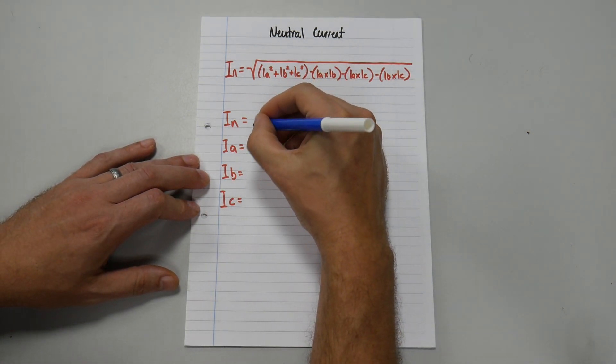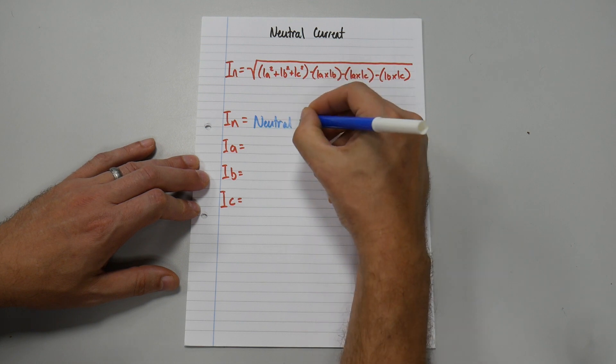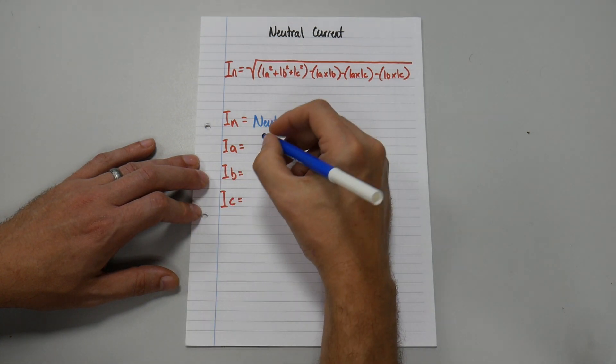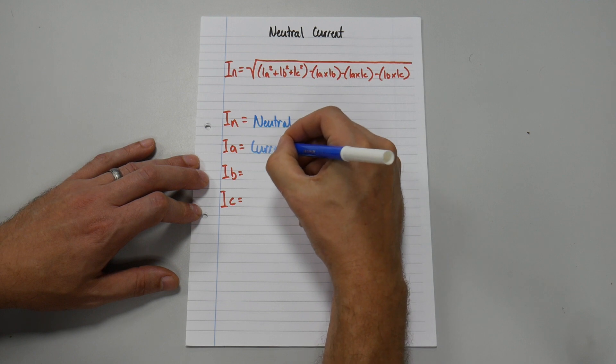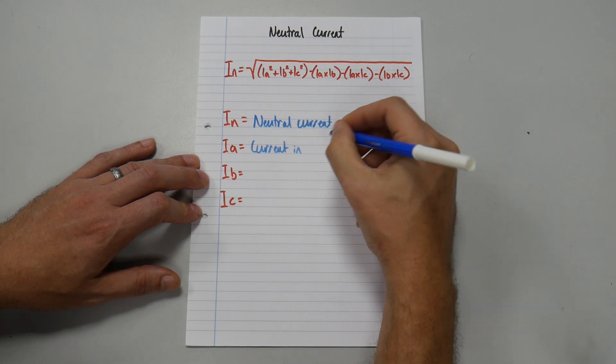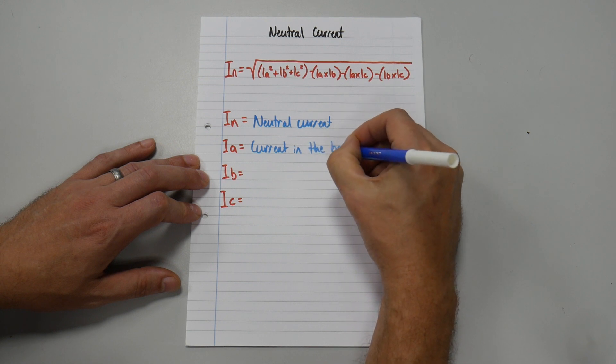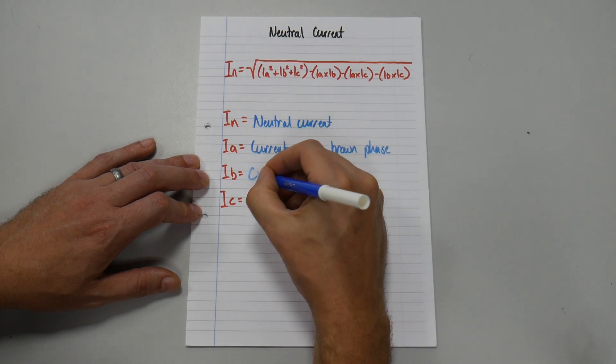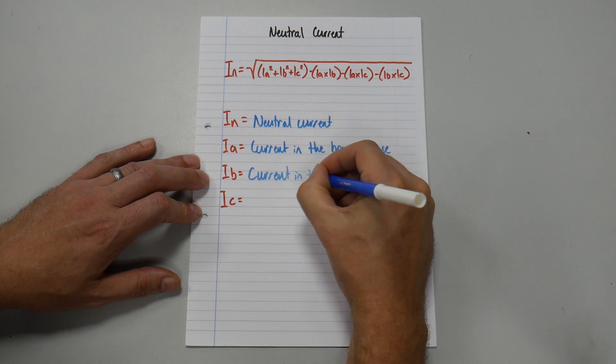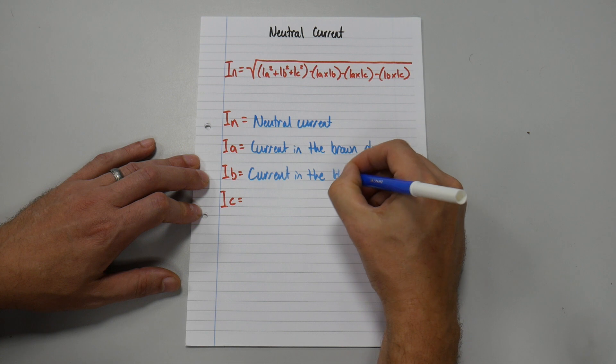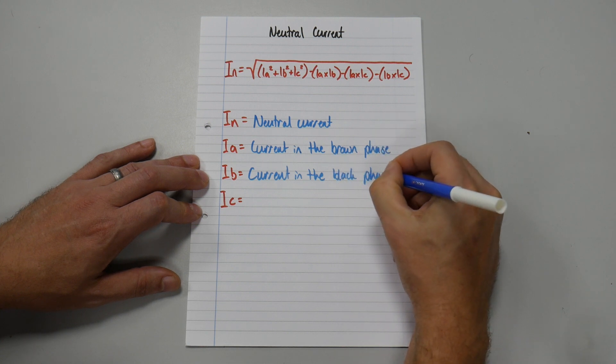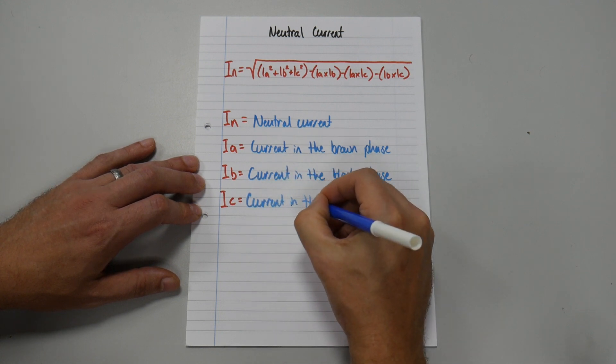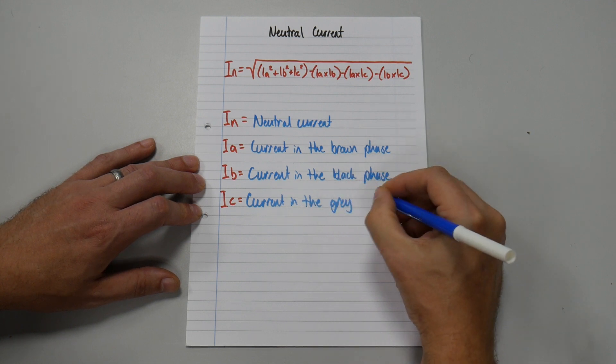I n is the neutral current. And I A is current in the brown phase. And I B, current in the black phase. And I C, current in, you've guessed it, the grey phase.